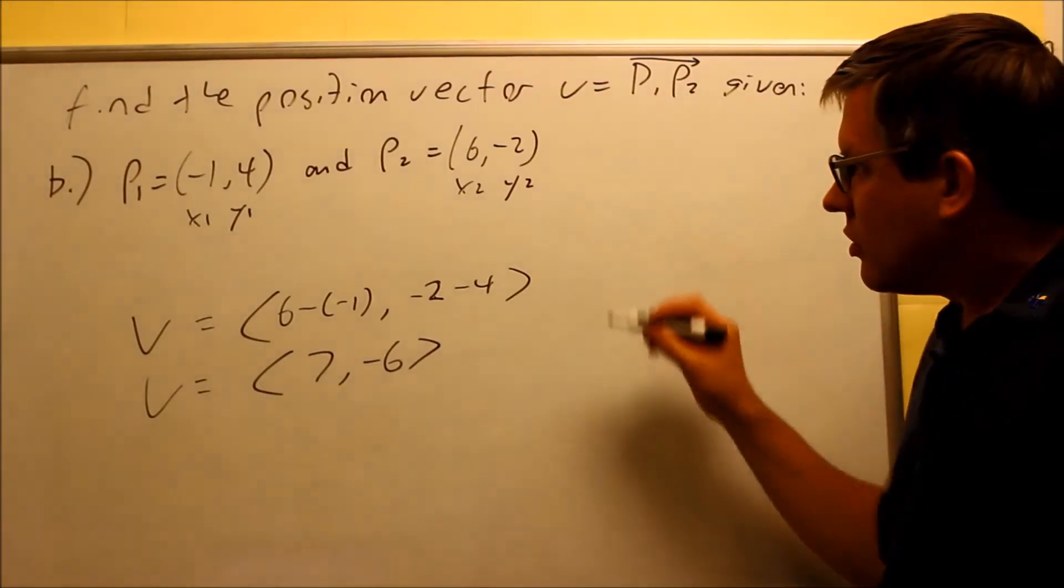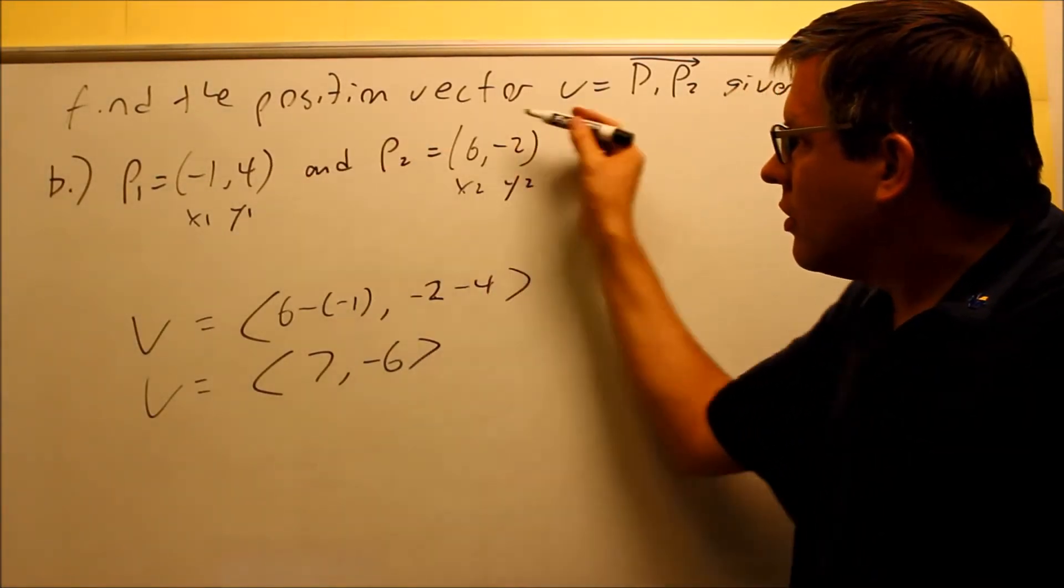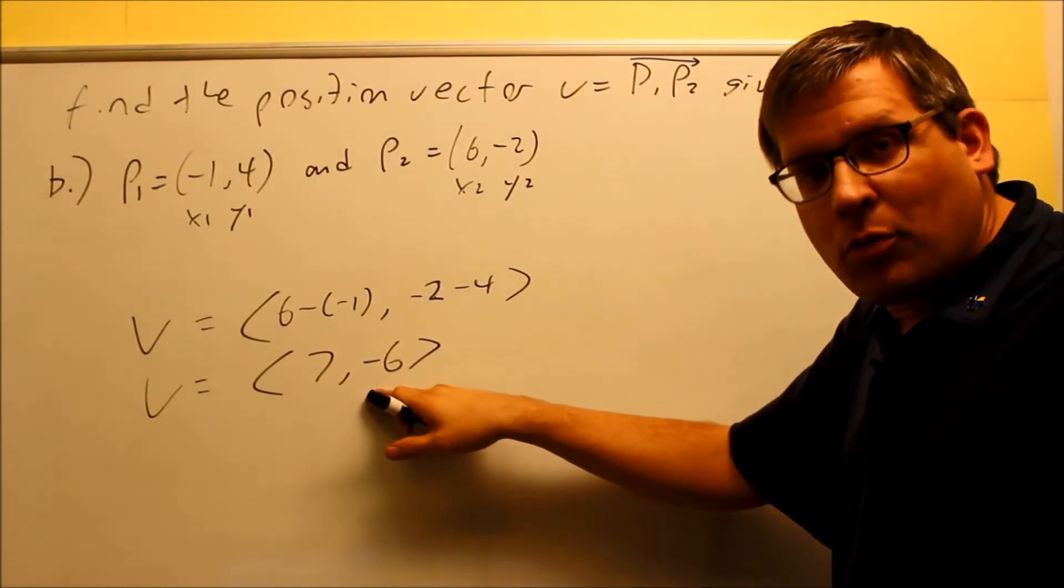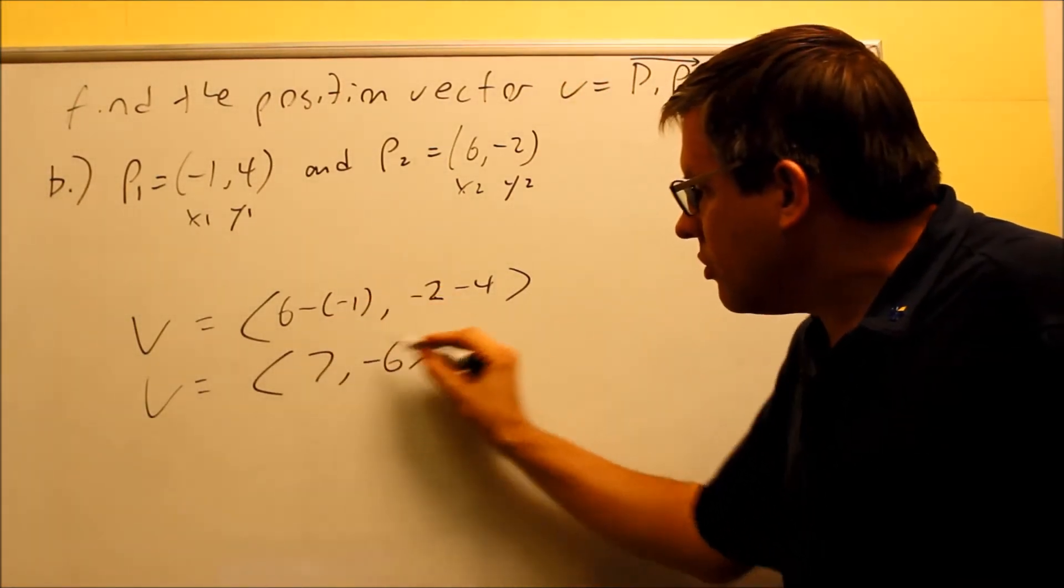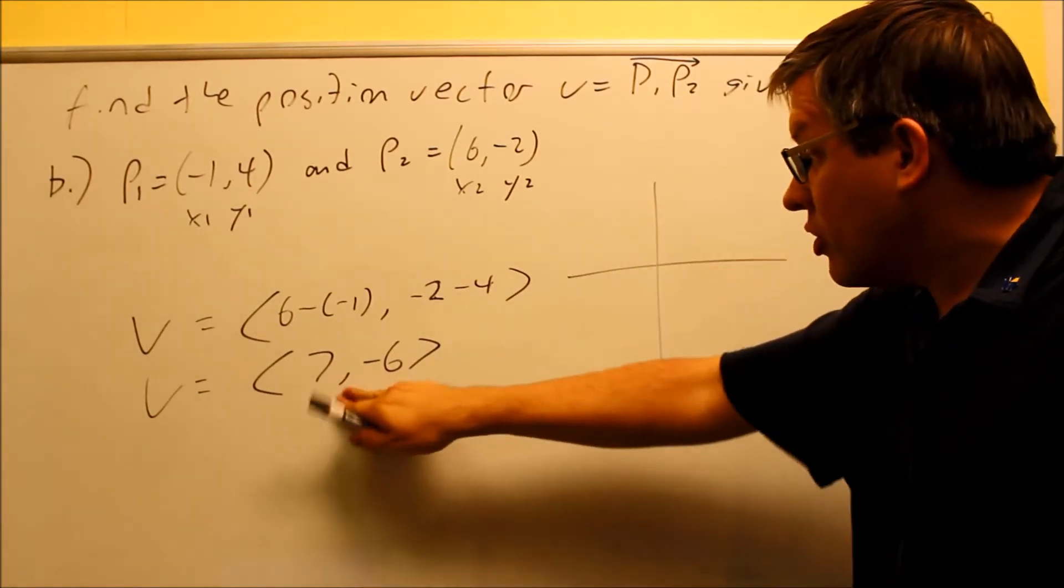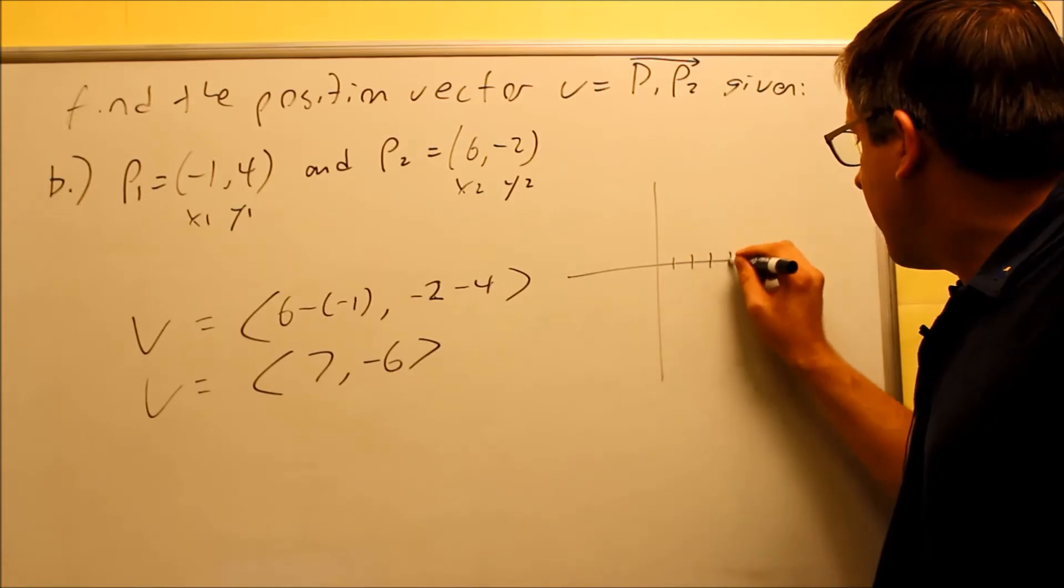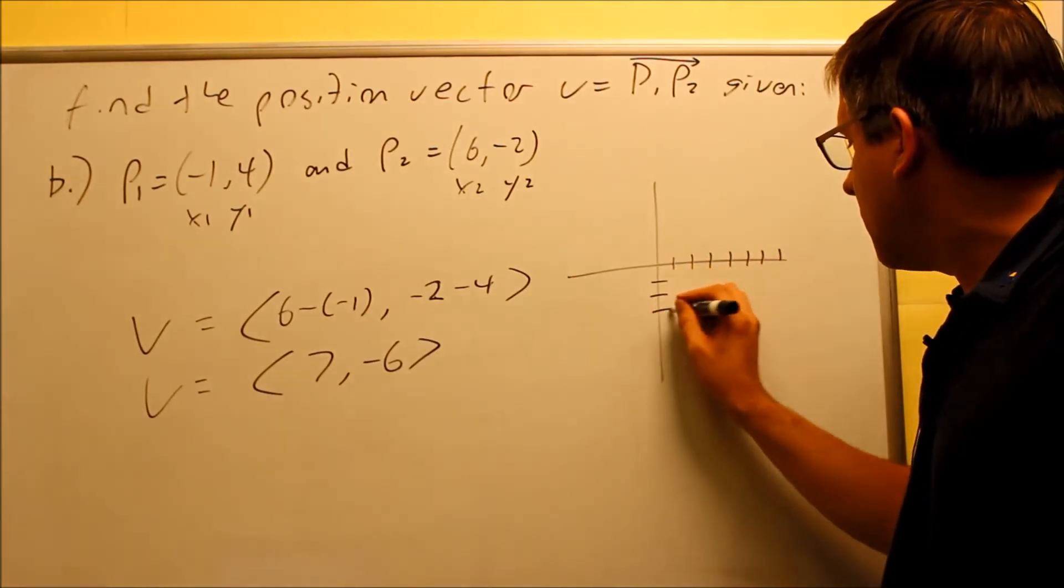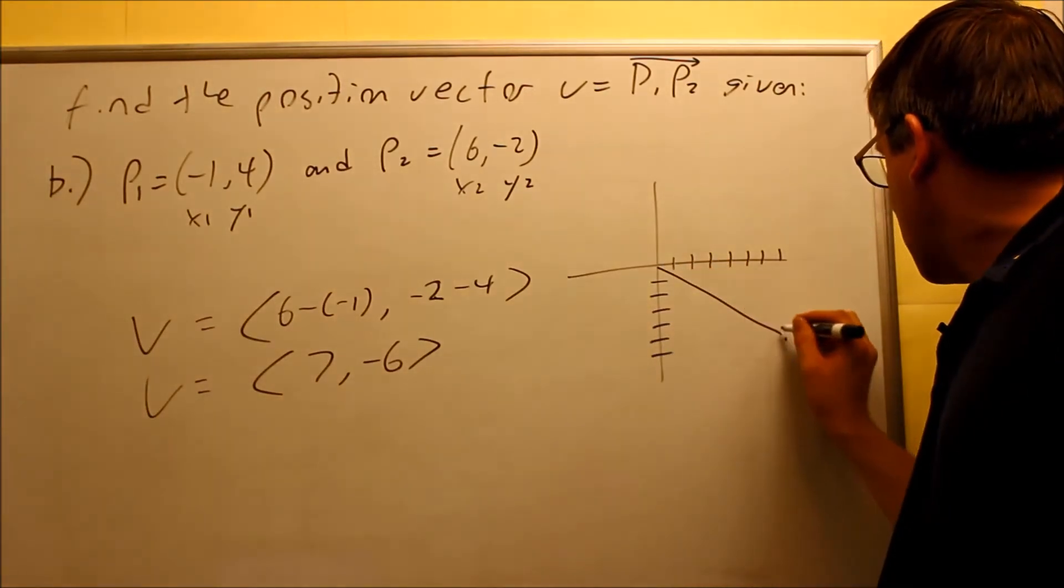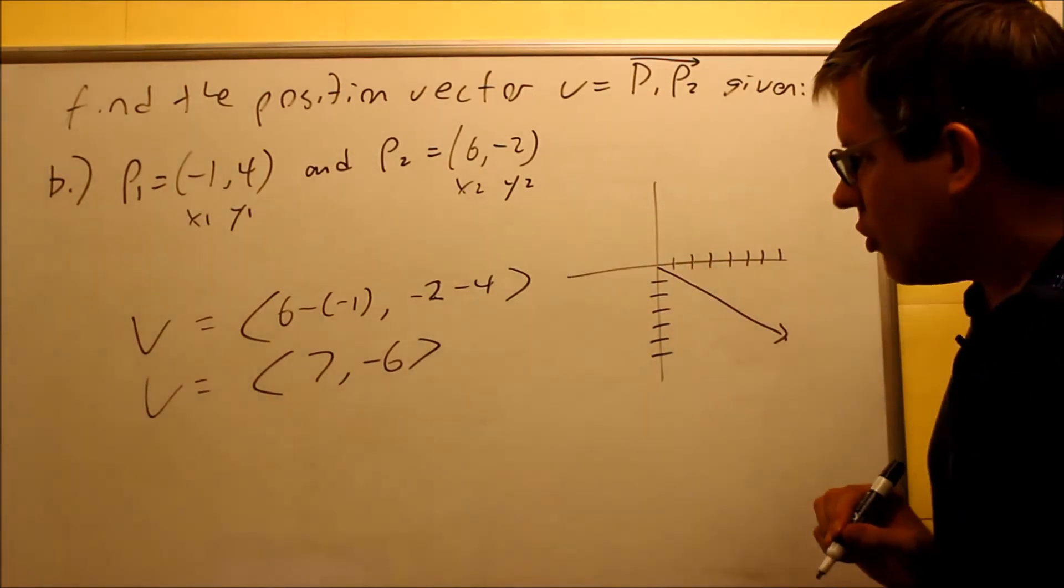So again, all that did was originally where this was plotted, it just took that original vector and moved it to the starting point 0,0 and it goes out to 7 and negative 6. What would that actually look like? Well, if I just drew this one only, I go over 7 and I go down 6. So this vector actually points down.